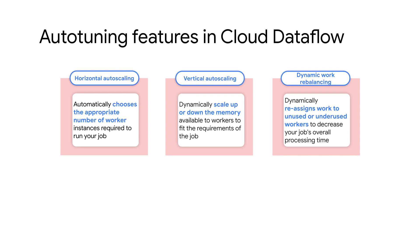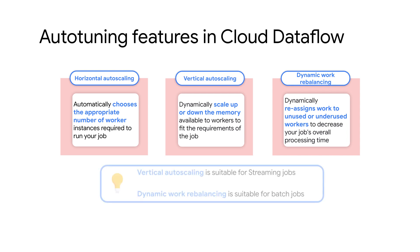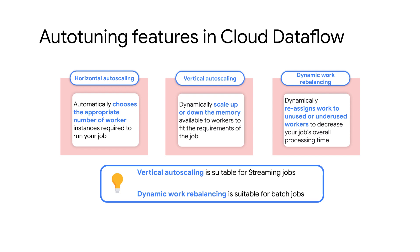Dynamic work rebalancing is accomplished by automatically detecting certain conditions, including imbalances in work assignments or workers finishing faster or slower than expected. It's helpful to note that while vertical auto scaling is suitable for streaming jobs, dynamic work rebalancing is well matched to batch jobs where right-fitting happens for the workload.